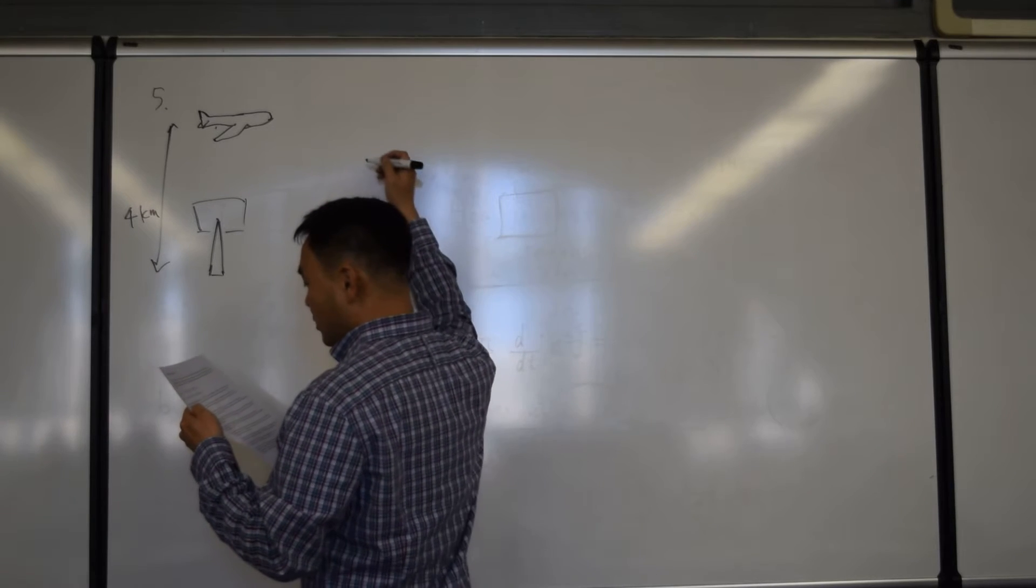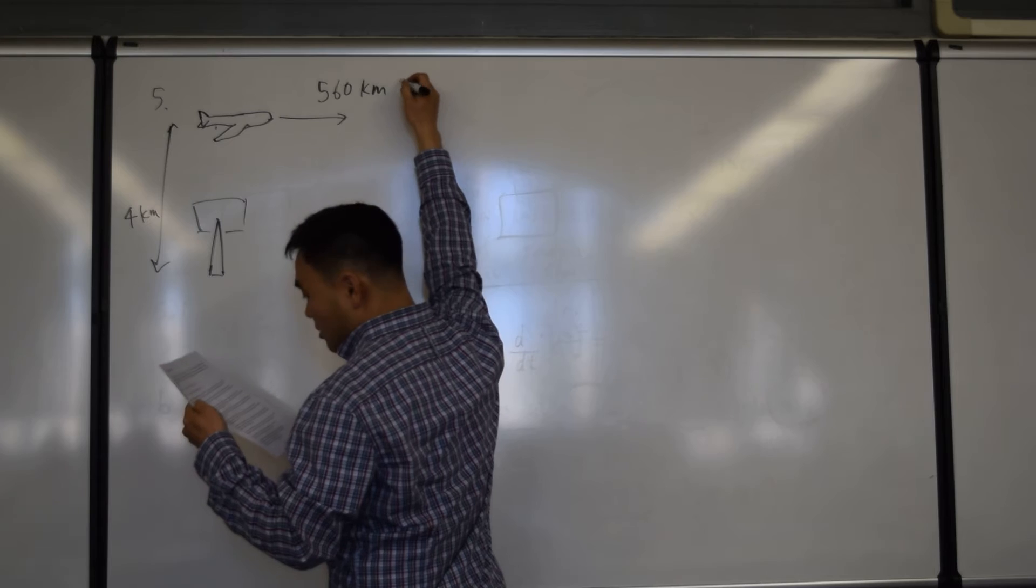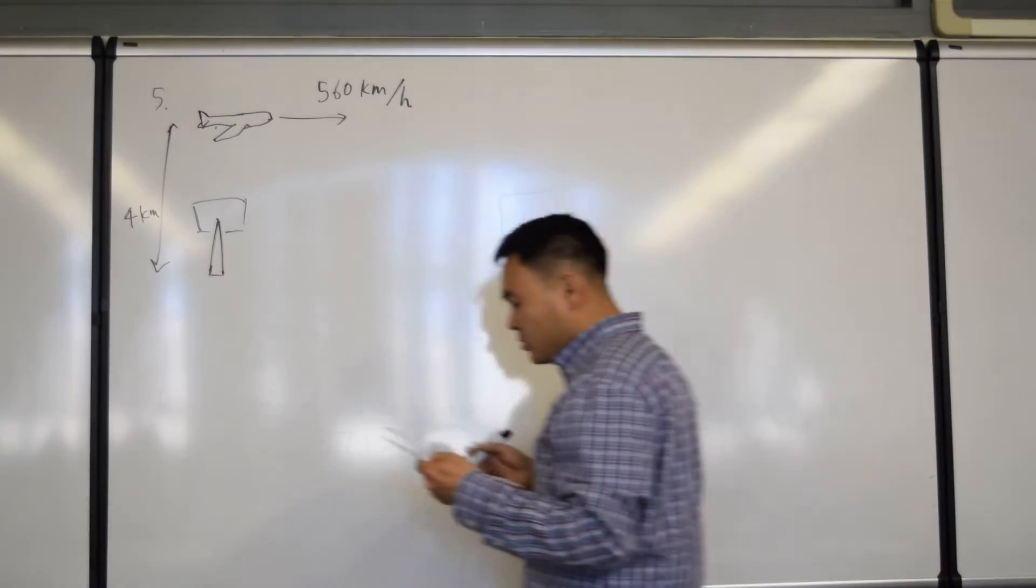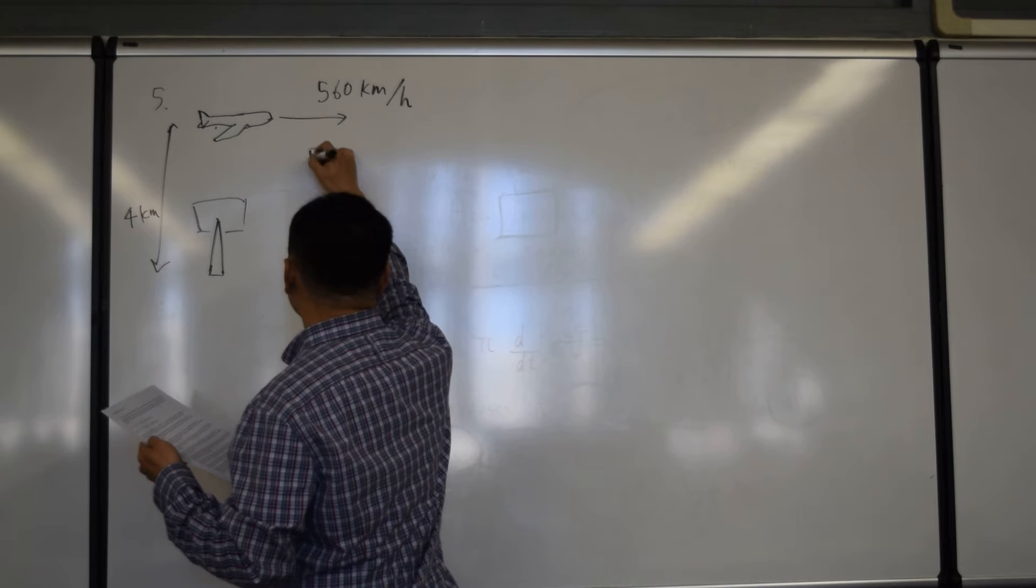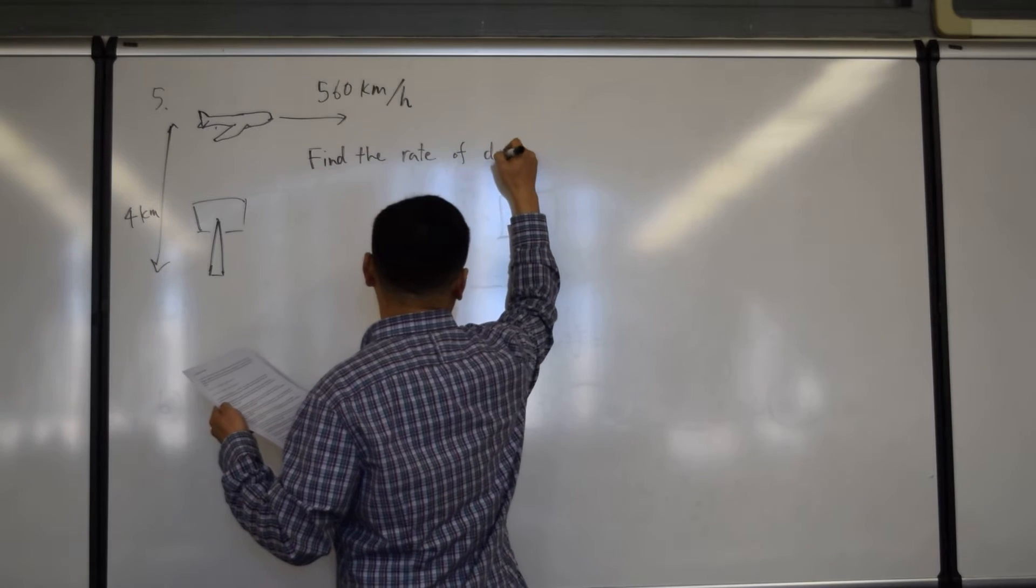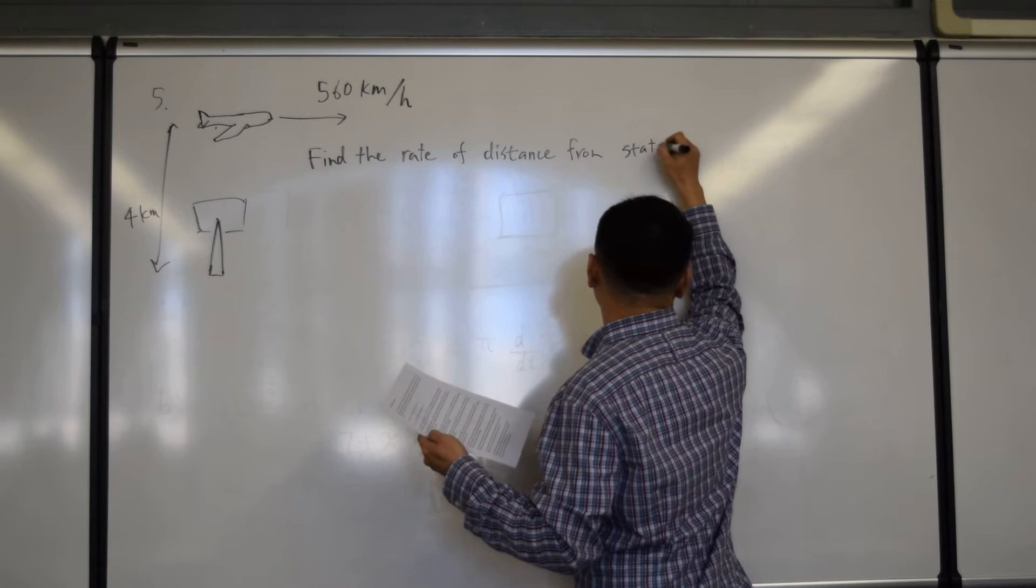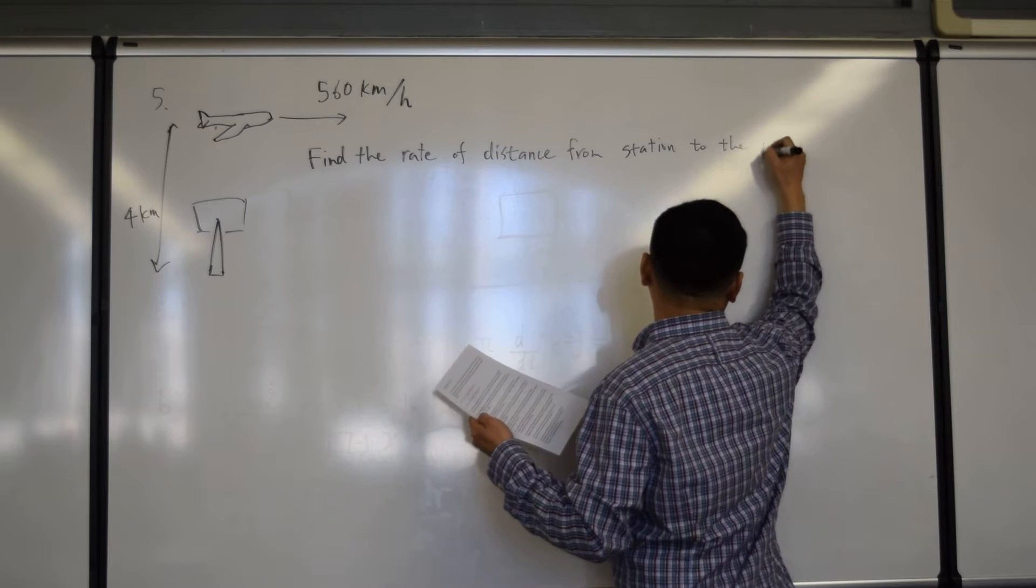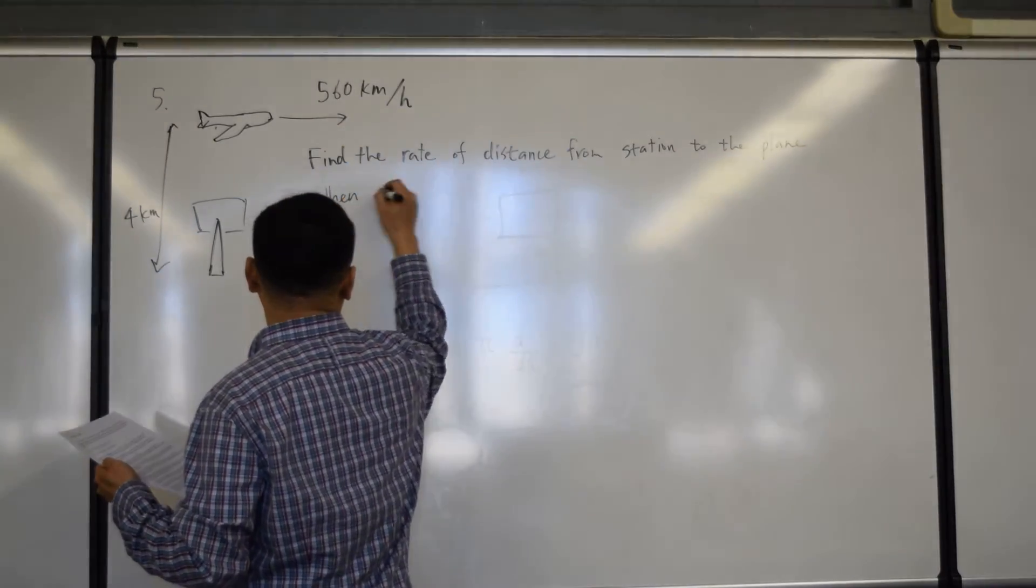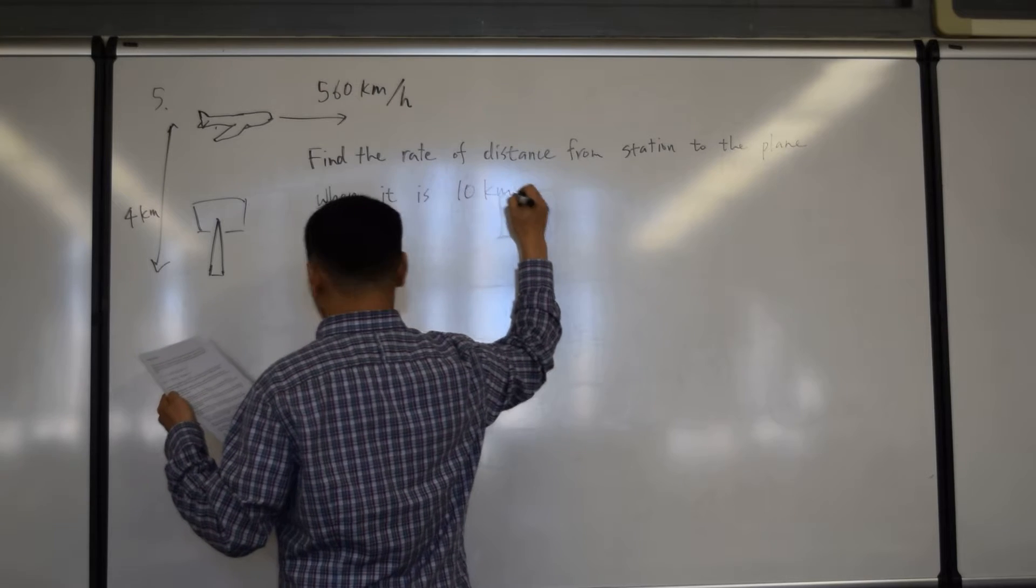And the plane is flying horizontally at the speed of 560 kilometers per hour. Find the rate at which the distance from the plane to the station is increasing. Find the rate of distance from the radar station to the plane when it is 10 kilometers away from the station.